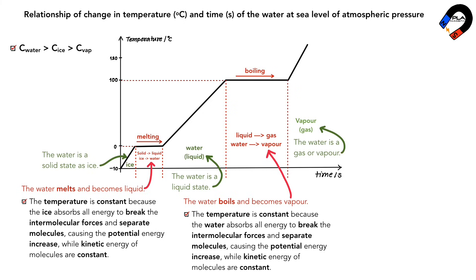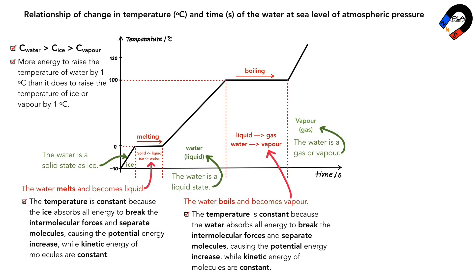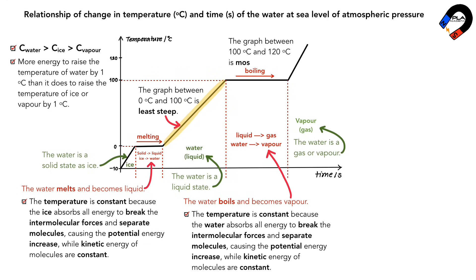The specific heat capacity of water is more than ice, and the specific heat capacity of ice is more than vapor. This means that it takes more energy to raise the temperature of water by 1 degree Celsius than it does to raise the temperature of ice or vapor by 1 degree Celsius. This causes the graph between 0 and 100 Celsius to be least steep, and the graph between 100 and 120 Celsius to be most steep.